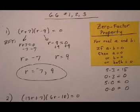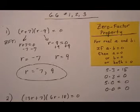And let's look at number 2. Same idea. Two different binomial factors equaling 0. So we're going to say, zero factor theorem, 13r plus 7 equals 0, or 6r minus 18 equals 0.